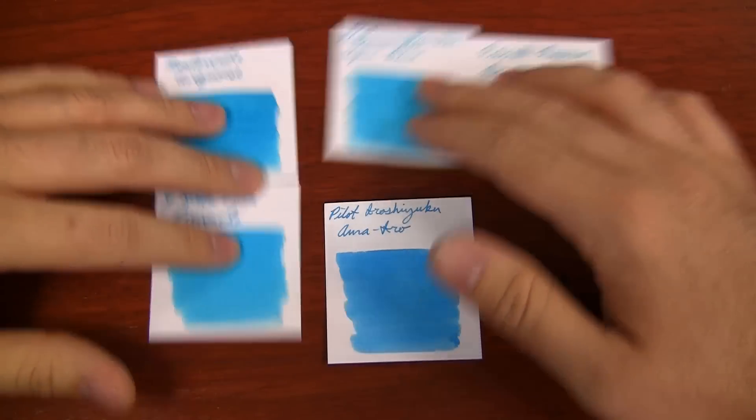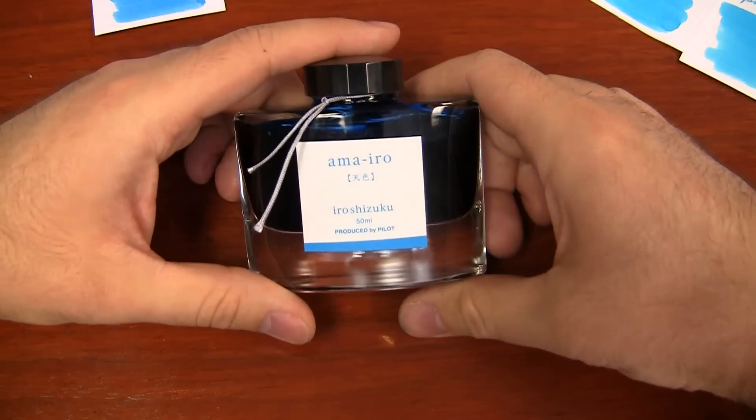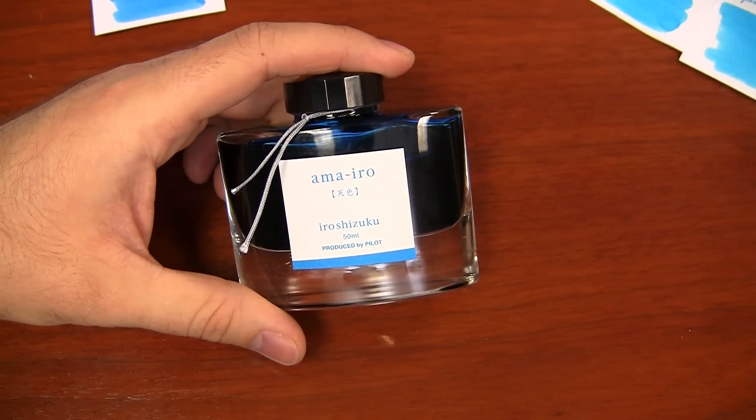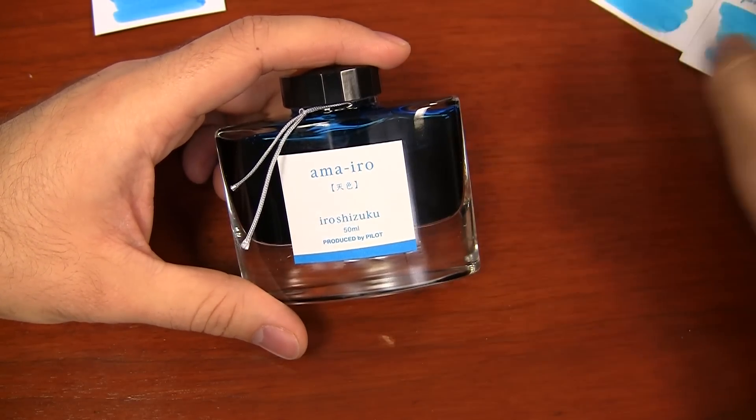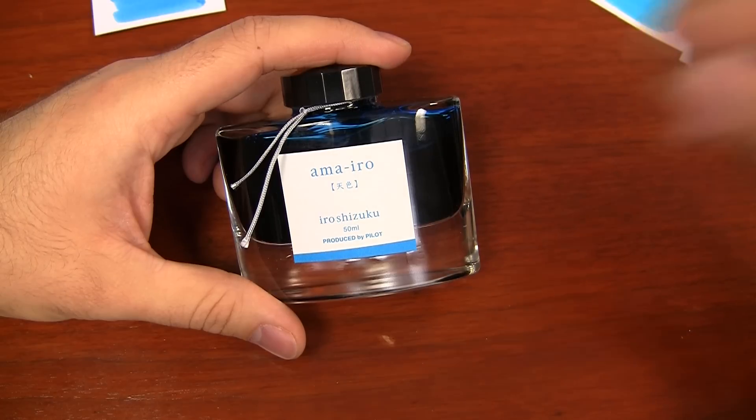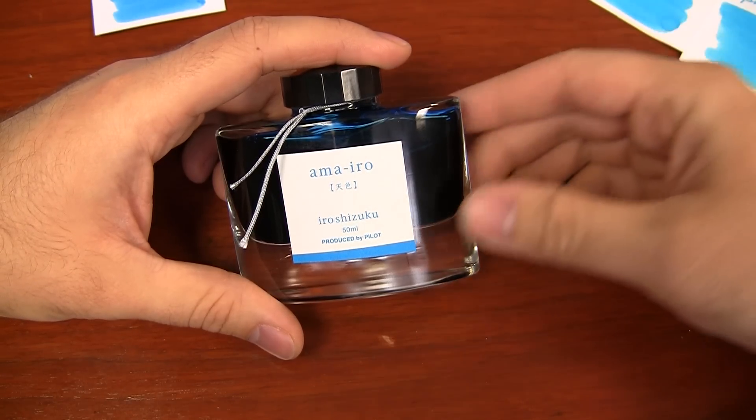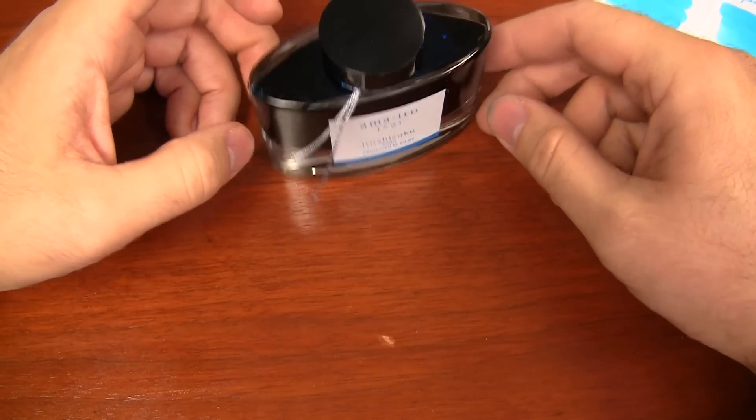So there you have it. Ama Iro. I'm a fan of it. I'm not totally in love with it, not as much as I was hoping I would be. But then again, I didn't have really high expectations just because I've already got so many good blues that I love in this color range. But if you really like Iroshizuku, you really like sky blues, it's definitely one that I could recommend that you would probably like quite a bit, as long as you've got a little bit of time to let it dry on the page.